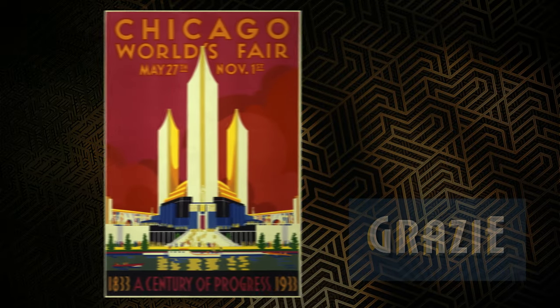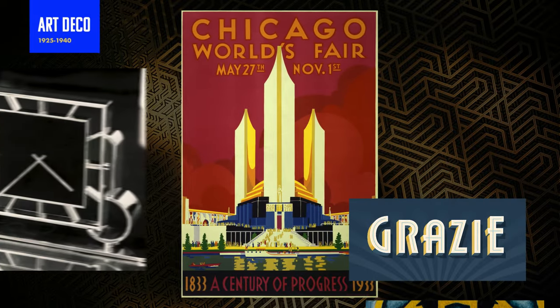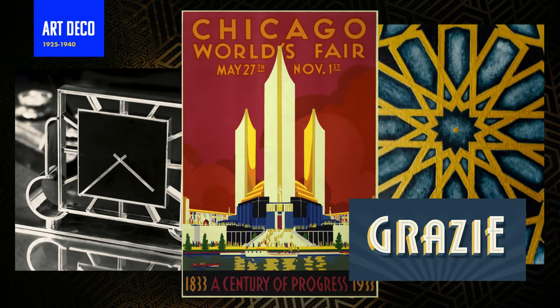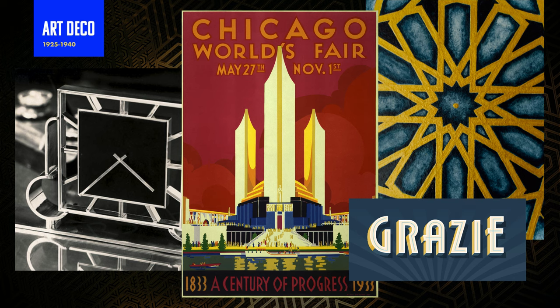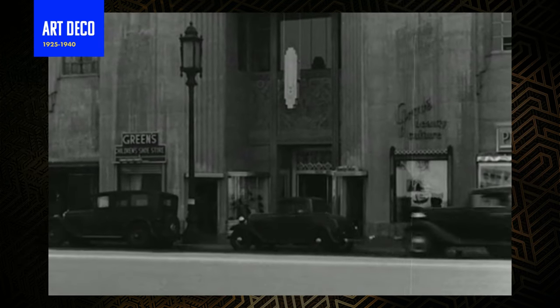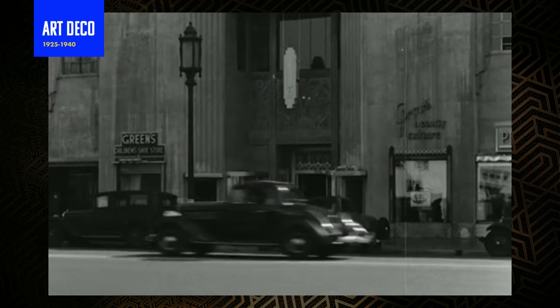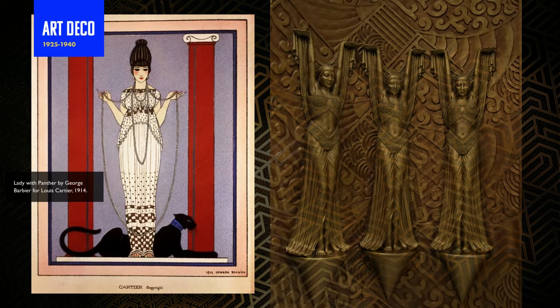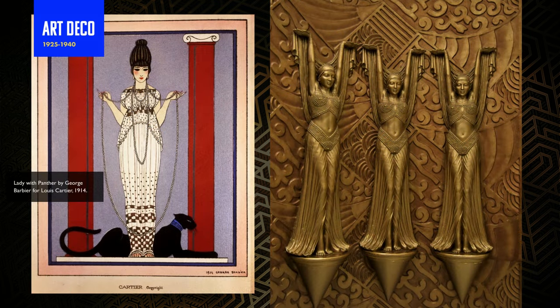The next style we're going to discover is Art Deco, which roughly lasted between 1925 to 1940. This would be described as dramatic, opulent, detailed, and luxurious.